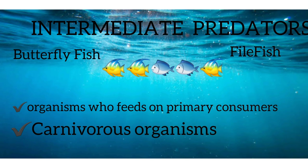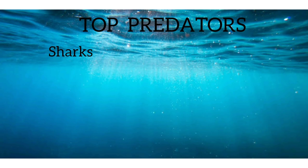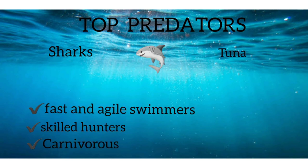Intermediate predators are organisms who feed on primary consumers and are known as carnivorous organisms. Lastly, the top predators include sharks and tuna. These organisms are fast swimmers and skilled hunters, and are carnivorous as well.